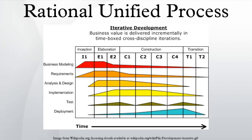The six best practices are: develop iteratively, with risk as the primary iteration driver; manage requirements; employ a component-based architecture; model software visually; continuously verify quality; and control changes. These best practices both drove the development of Rational's products and were used by Rational's field teams to help customers improve the quality and predictability of their software development efforts.